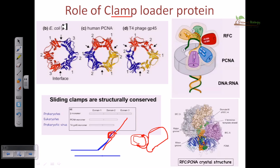The importance of clamp loader proteins and clamp proteins is very significant. If you look at different species or organisms like E. coli, human PCNA ring, or phages, there is the presence of these clamp proteins. These clamp proteins are structurally almost similar in all cases, indicating evolutionary origin.